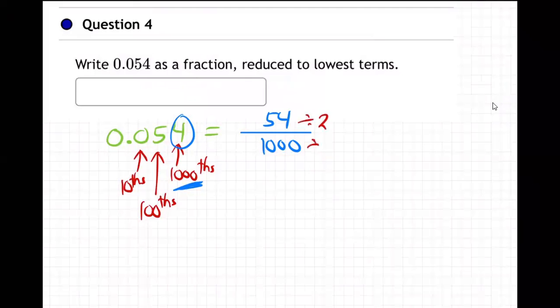So use your calculator. Divide by two top and bottom. I'm getting 27 over 500, and that's it. We can't divide by two or anything else anymore. This is 27 over 500, like that.